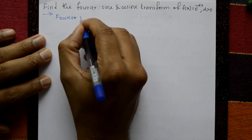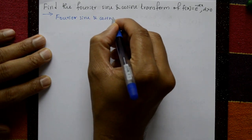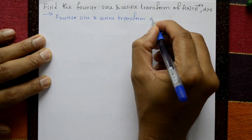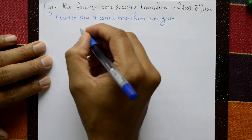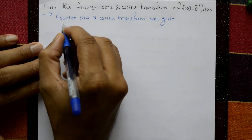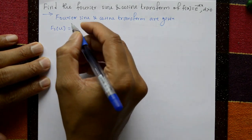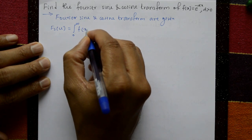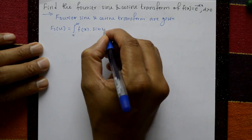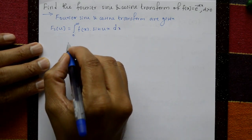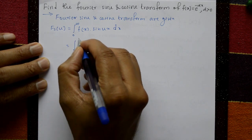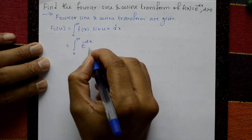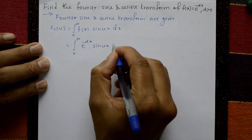Fourier sine and cosine transforms are given. Solve one by one. First, the sine transform: fs(u) is equal to the integration from 0 to infinity of f(x) into sine(ux) with respect to x. Now, f(x) is e raised to minus alpha x, so we integrate e to the minus alpha x into sine(ux) with respect to x.